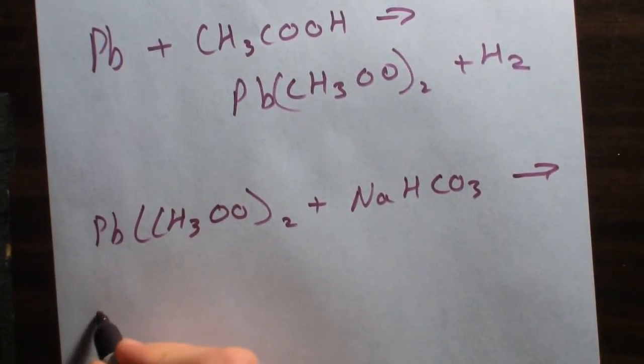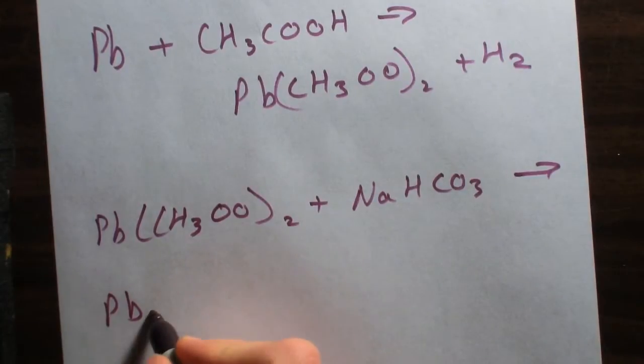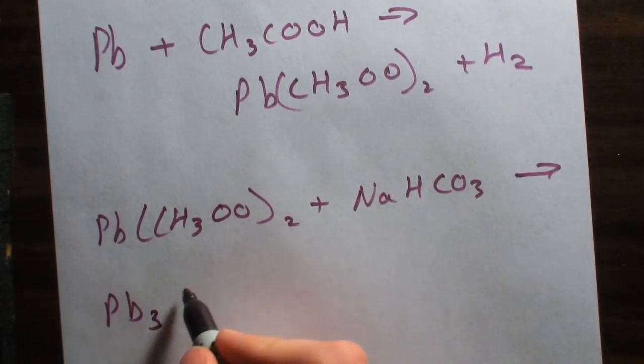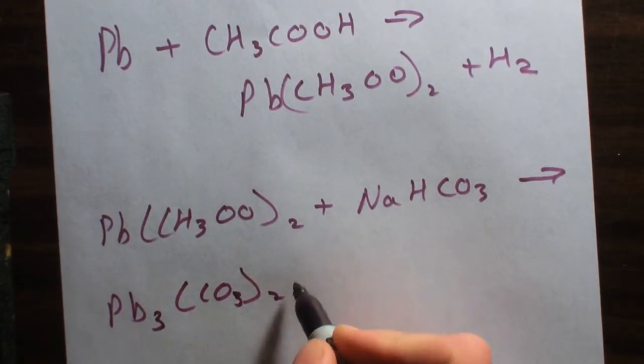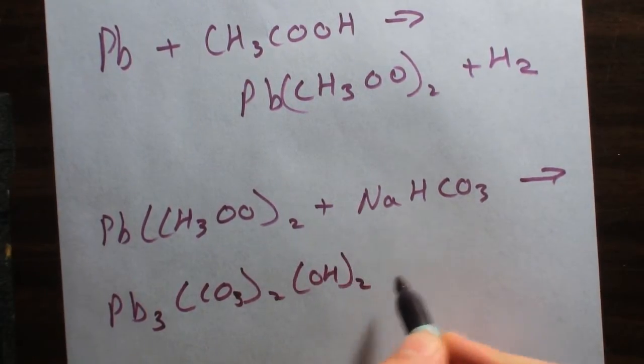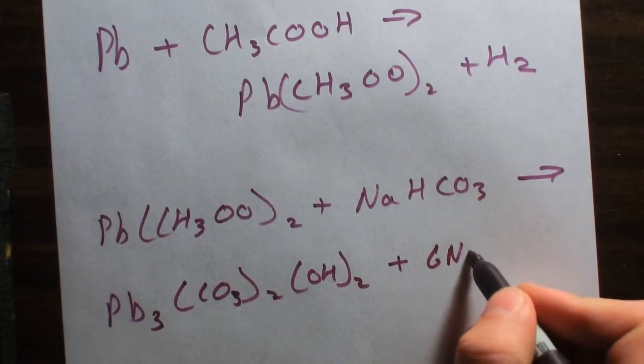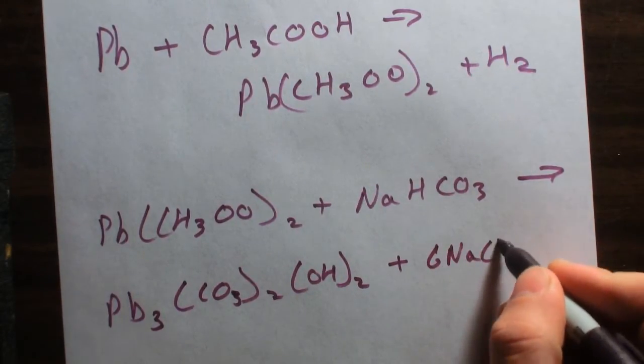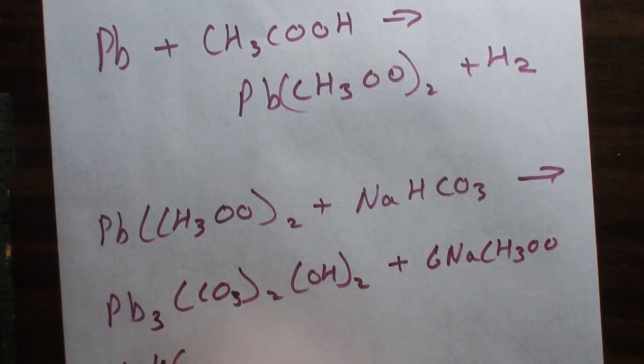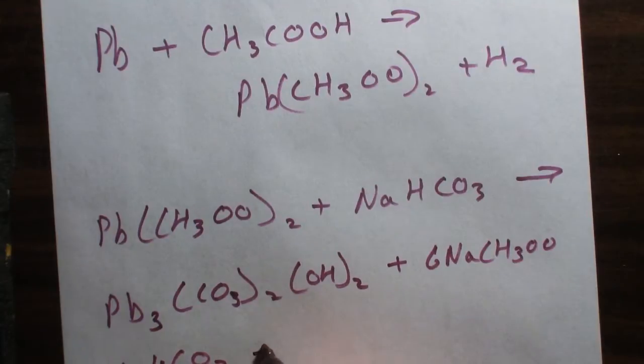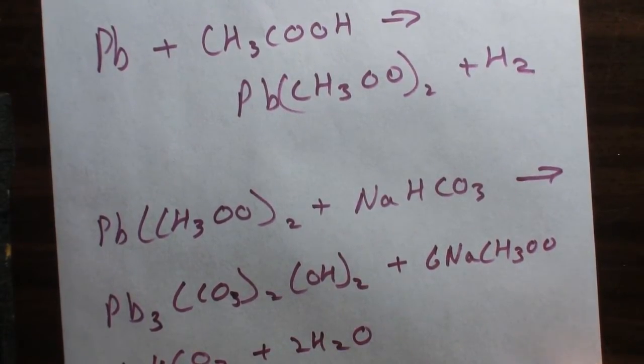This will yield basic lead carbonate, which is this formula here. It's also going to give us sodium acetate in solution. Some CO2 is going to come off and we're going to make a couple of moles of water.